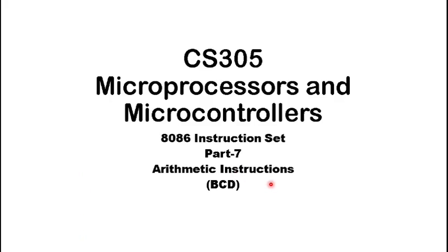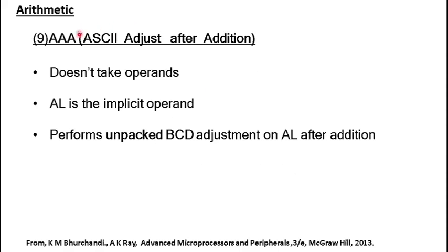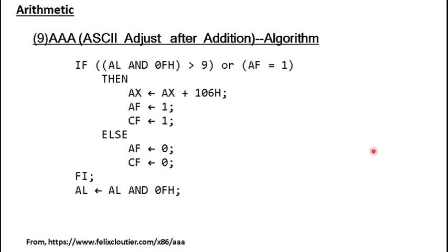This is the seventh part of BCD arithmetic instructions. We will see the instruction AAA — ASCII Adjust After Addition. The class of instructions we are going to see now will leave unpacked BCD representation after the instruction is issued. AAA doesn't take any operands; it just adjusts the number kept in AL to unpacked BCD representation, and it is issued after addition.